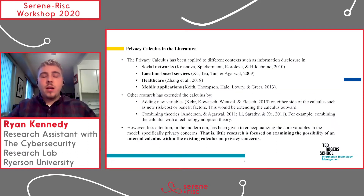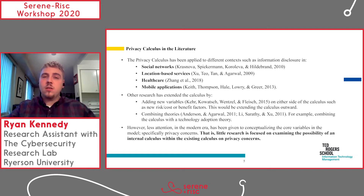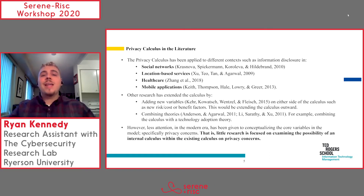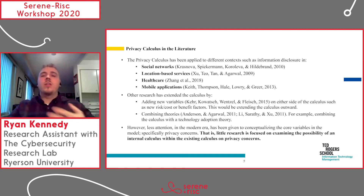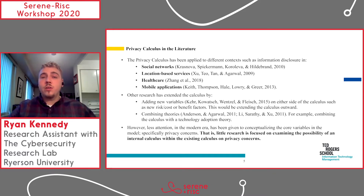The privacy calculus has become a dominant paradigm within the privacy literature to understand privacy concerns. It's been used for social networks, location-based services, healthcare, mobile applications, and more. Other research hasn't just applied it in new contexts — they've actually extended it, for example by adding new variables on either the cost or risk side, or by combining new theories with the existing privacy calculus, such as combining the calculus with a technology adoption theory to understand how privacy concerns influence adoption decisions.